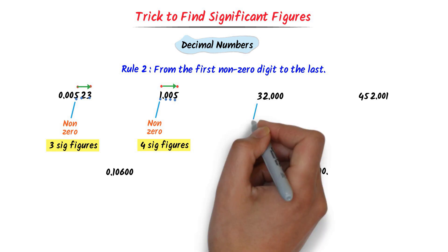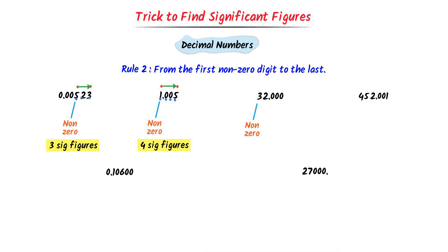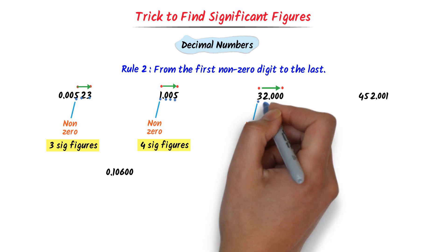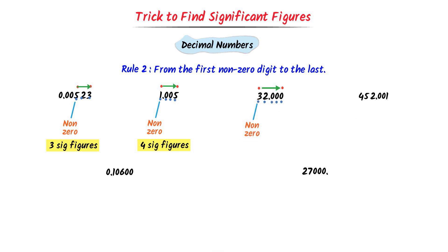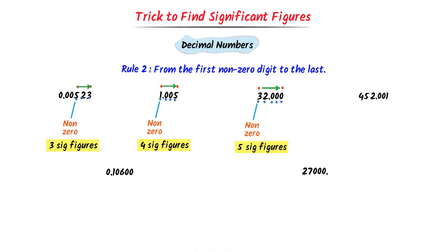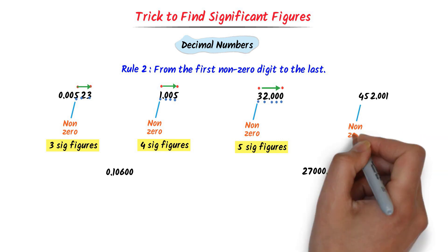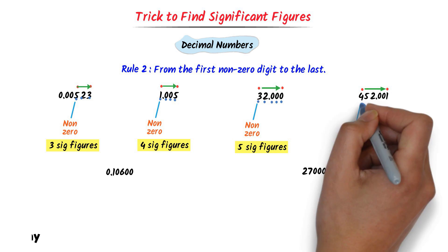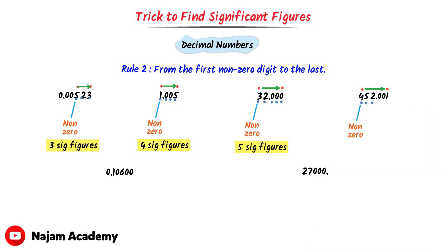In case of the third number, the first non-zero digit is 3. I go from 3 to the last: 1, 2, 3, 4, 5. There are 5 digits or 5 significant figures present in this number. In case of the fourth number, the first non-zero digit is 4. I go from 4 to the last: 1, 2, 3, 4, 5, 6. There are 6 digits or 6 significant figures present in this number.